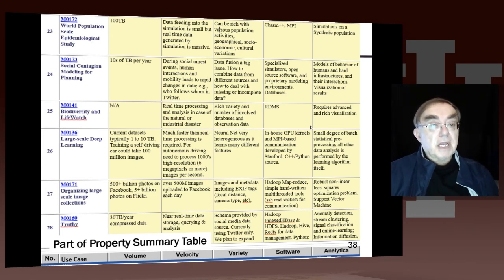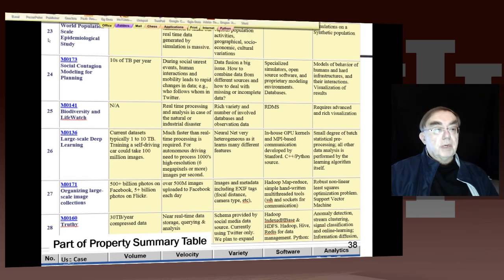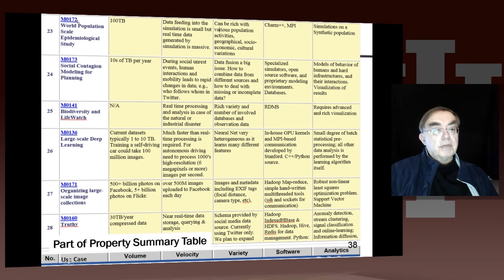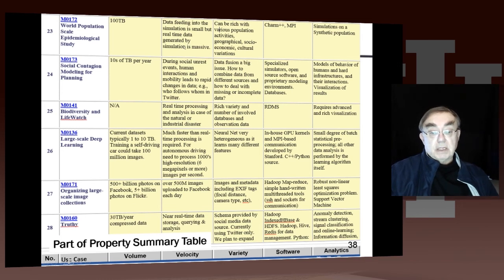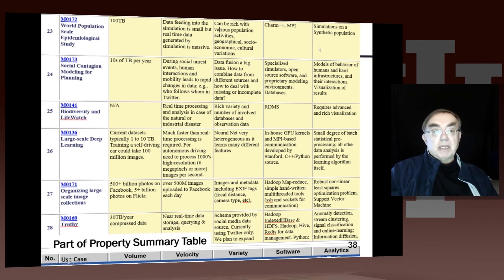Here is an example of one of the tables in the final report. Each row summarizes information about one of the use cases. Use case 23, documented in document 172, is about epidemiology: data size is 100 terabytes, and it describes the velocity and variety of data, with software including classic HPC tools CHARM++ and MPI. The analytics involves simulations on a synthetic population — the big data is the synthetic population.